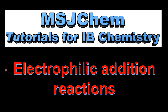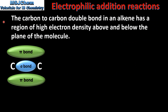This is MSJChem. In this video I'll be looking at electrophilic addition reactions. The carbon to carbon double bond in an alkene has a region of high electron density above and below the plane of the molecule. Here we have a carbon to carbon double bond — as you can see it's composed of one sigma bond and one pi bond.